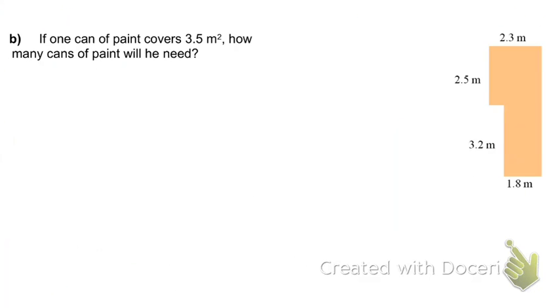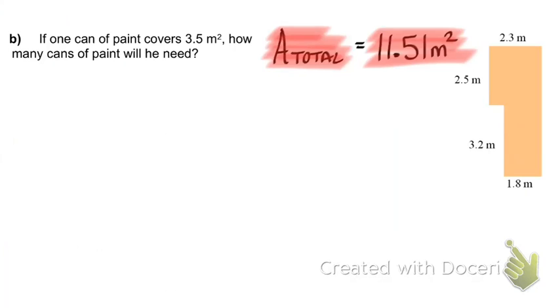In part B we need to determine how many cans of paint we'll need assuming that each can of paint will cover 3.5 meters squared. We know the total area of the basement floor is 11.51 meters squared. Some students might choose to use a table to demonstrate the relationship. If I have zero cans of paint I'm not going to cover any area.